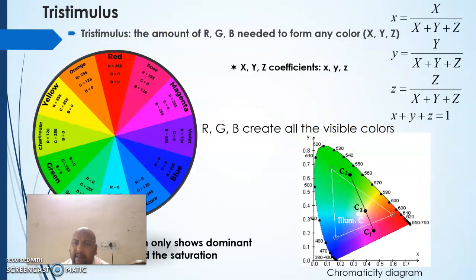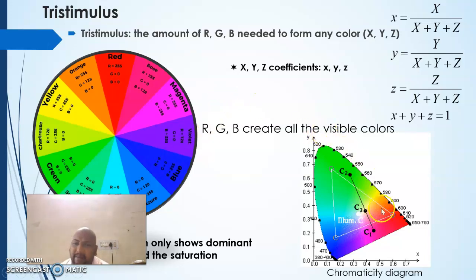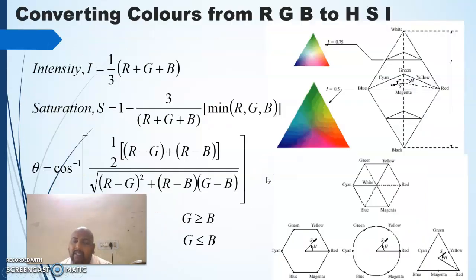Tri-stimulus refers to representing all colors using three colors — R, G, and B. These three stimuli represent the color image. The amount of red, green, and blue can be visualized using a chromaticity diagram.